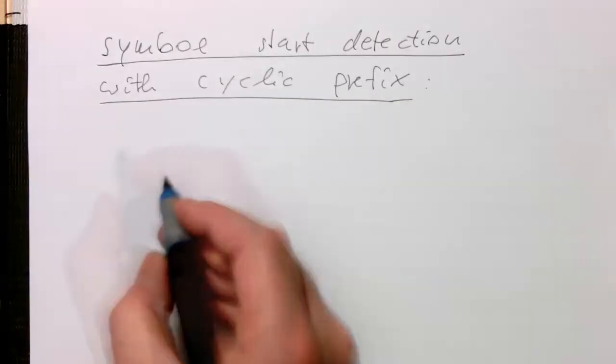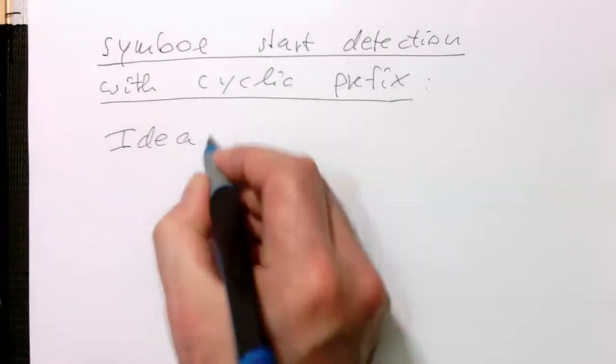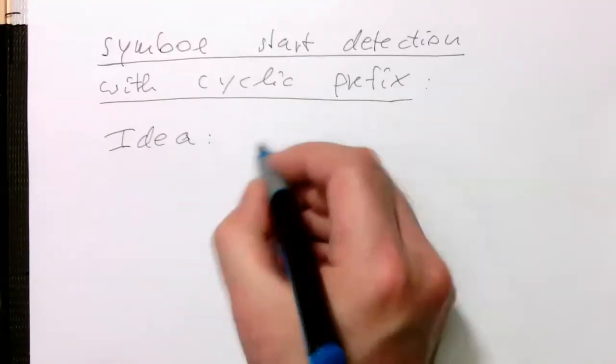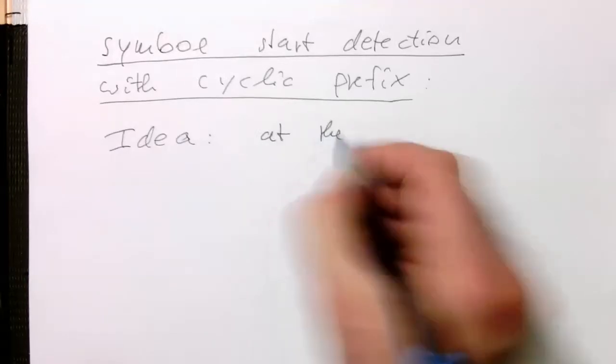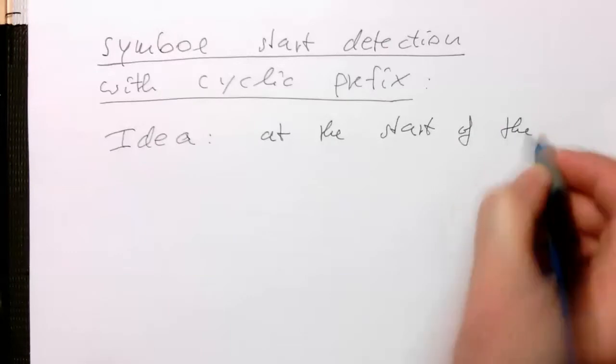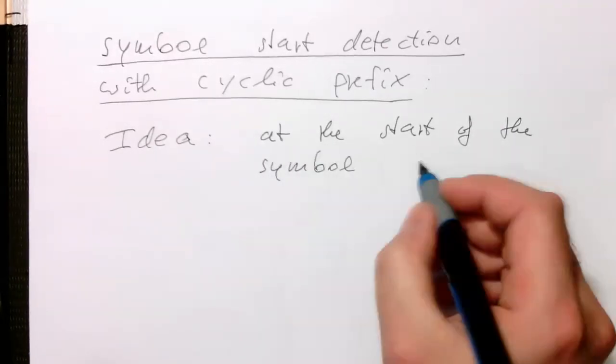The idea behind this is obviously very simple because we have created our signal like this. So now, at the start, at the start of the symbol, the start of the symbol there.